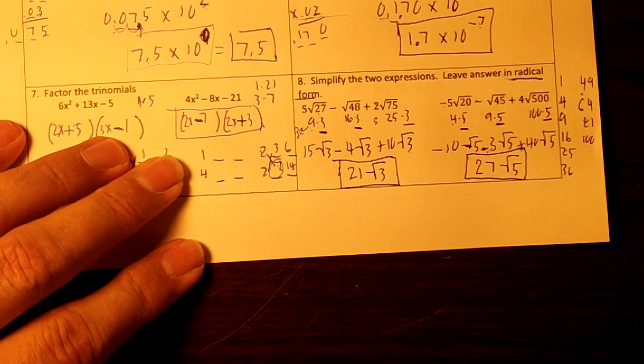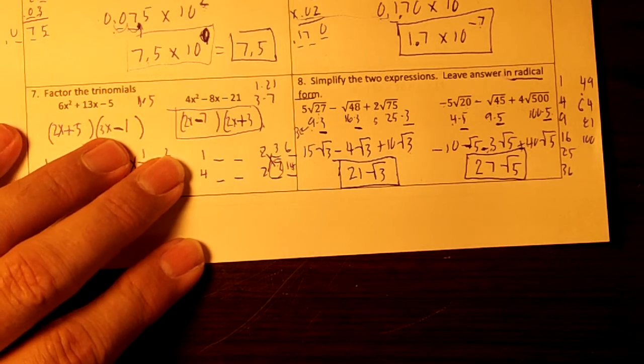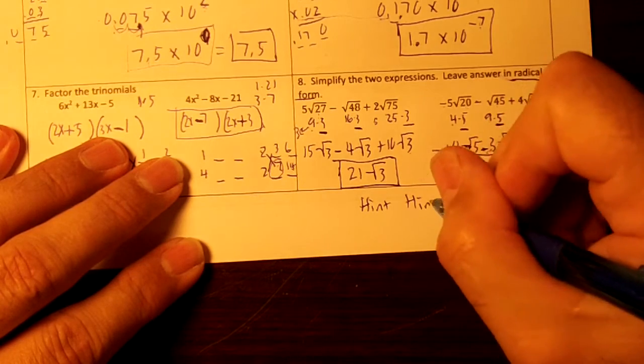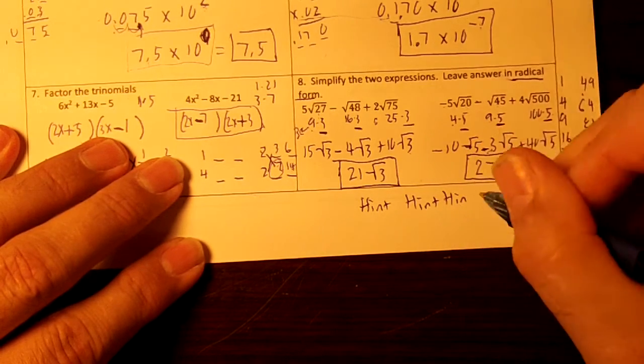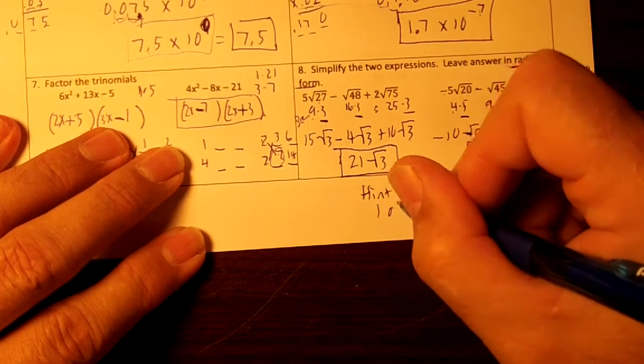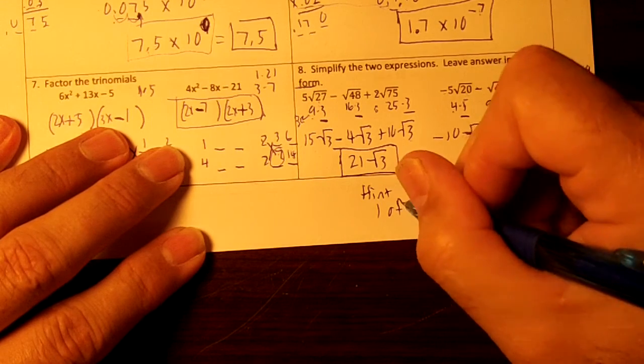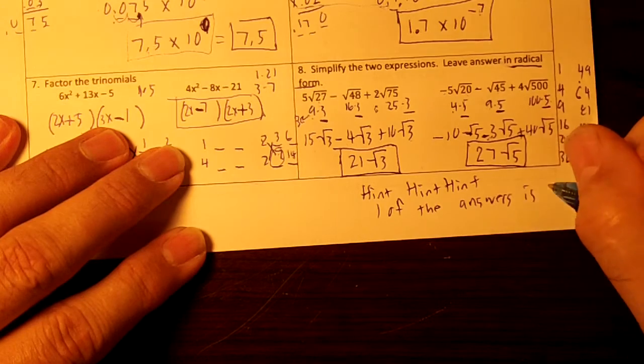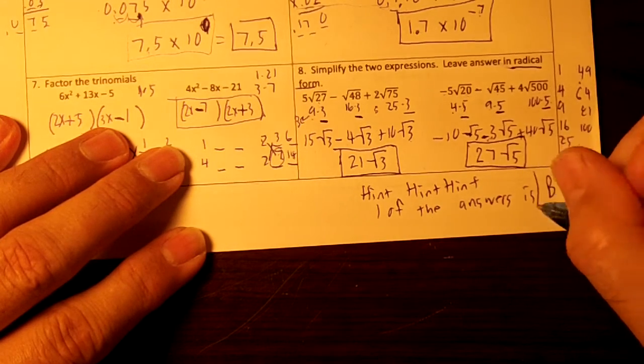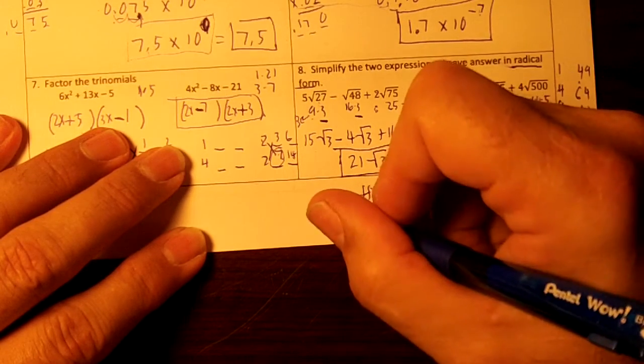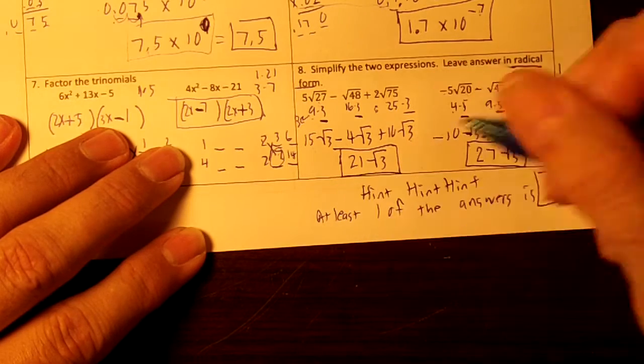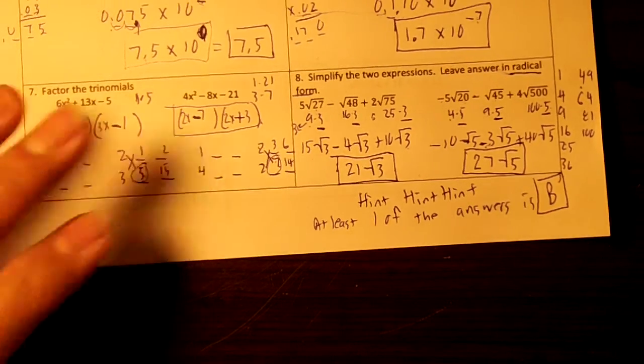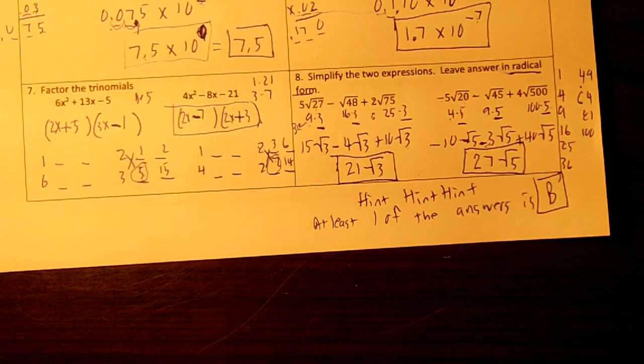A hint on your test tomorrow. Hint, hint, hint. One of the answers. Aren't you glad you're watching? One of the answers is B. And I'm going to put at least one. At least one of the answers on the test is B. That's giving you some help.